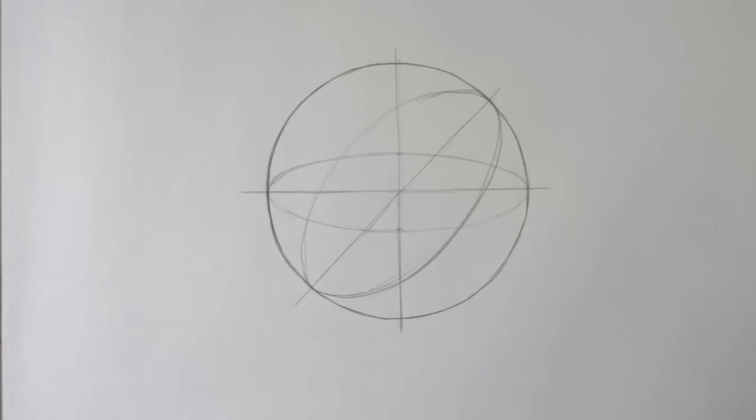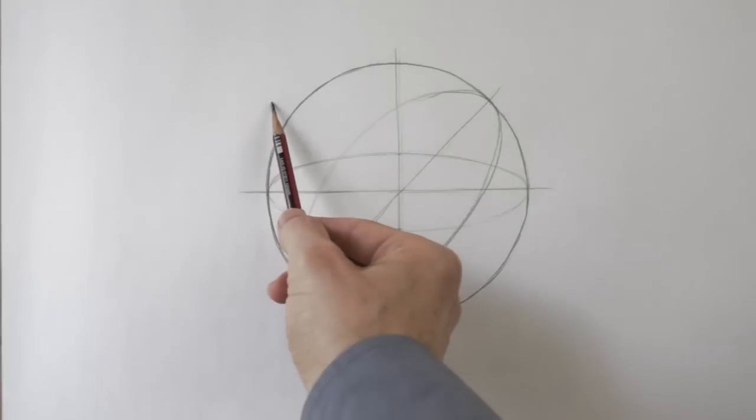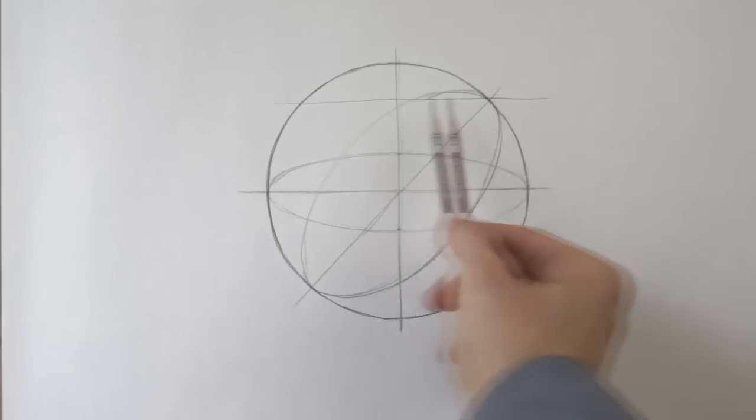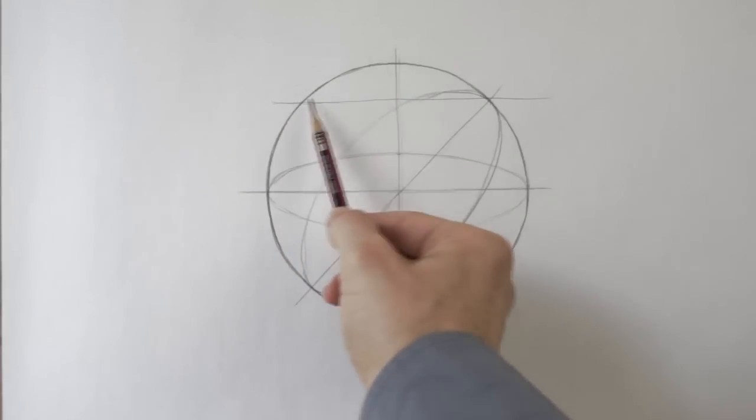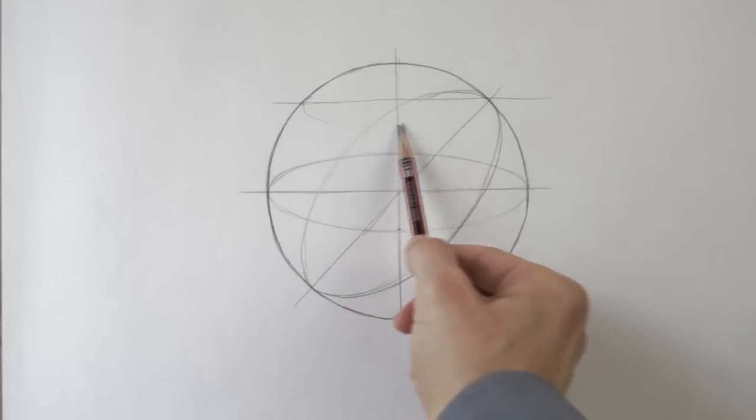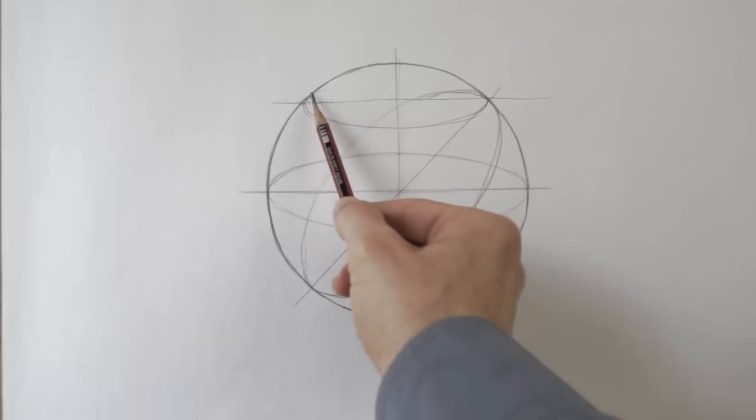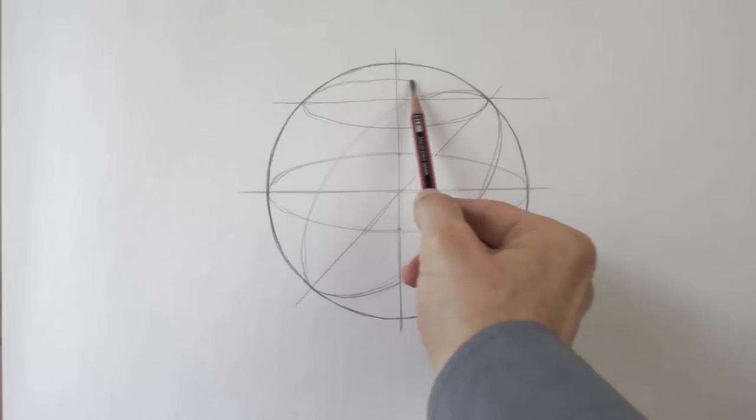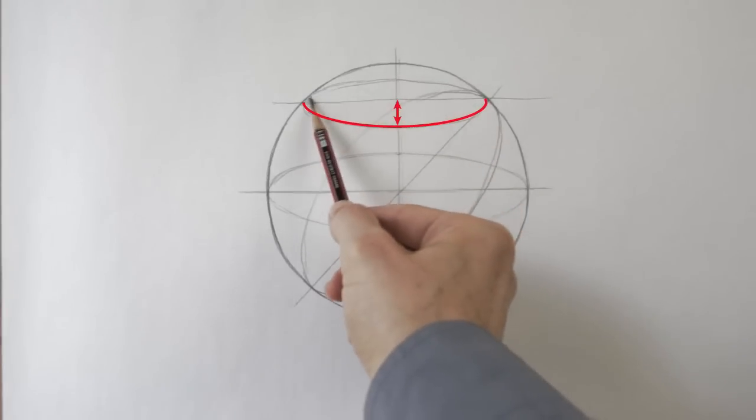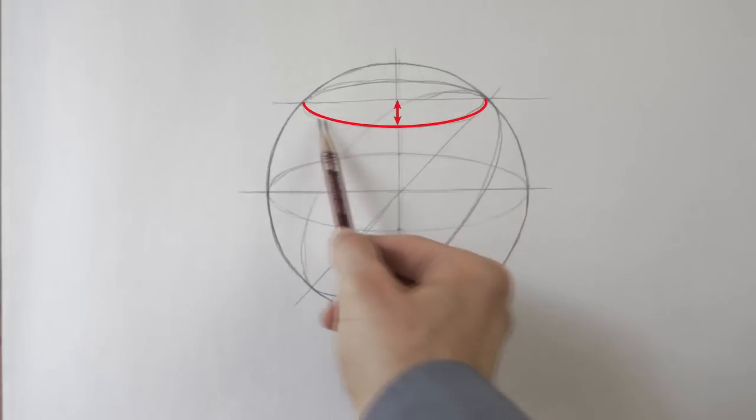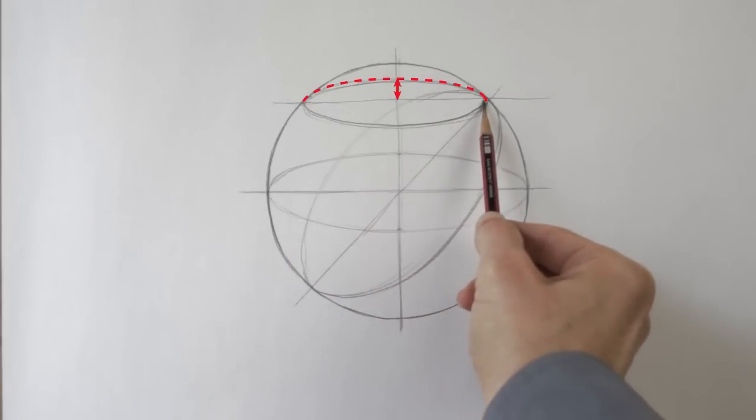A sphere's contour is always a circle. This circle, when viewed in perspective, looks like an oval. The direction of the oval's main axis depends on the tilt of the plane dissecting the sphere. Keep in mind that perspective applies to ovals as well. The part of an oval that is closer to the viewer will look slightly larger than the part that is farther away.